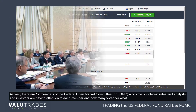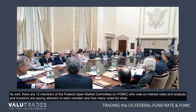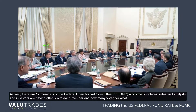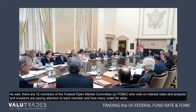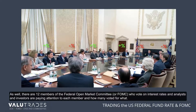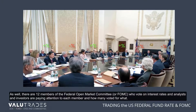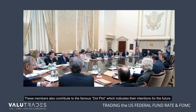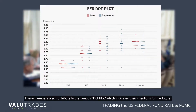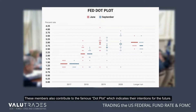There are 12 members of the Federal Open Market Committee, or FOMC, who vote on interest rates, and analysts and investors are paying attention to each member and how they voted and for what. These members also contribute to the famous dot plot, which indicates their intentions for the future.